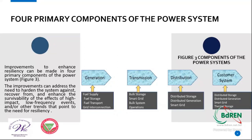The four pillars of the power system are generation, transmission, distribution, and the consumer system. Improvements must address robustness, recovery, and survivability against high-impact low-frequency events. For generation: fuel supply, fuel storage, fuel transportation, and grid integration. For transmission: bulk storage, smart grid, and bulk system operations. For distribution: distributed storage, distributed generation, and smart grid. For the consumer system: smart grid, thermal storage, distributed generation, and distributed storage.